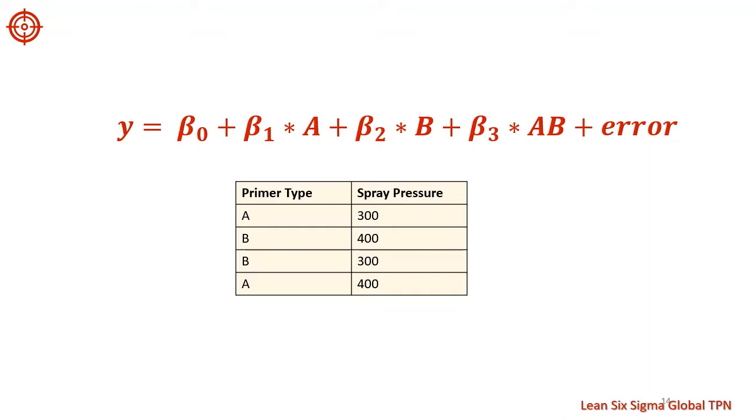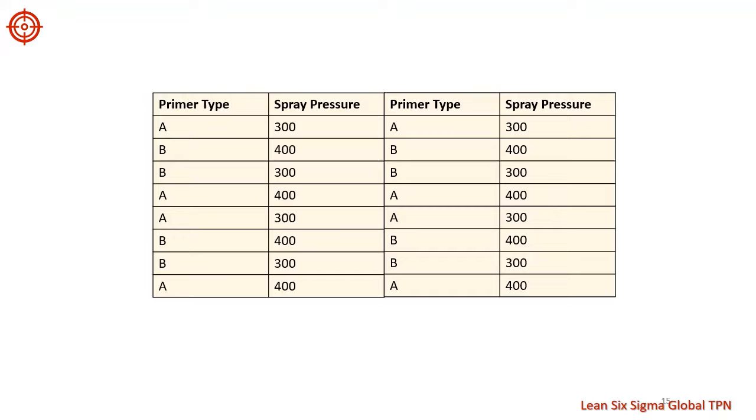Regardless of the factorial design, we always use one run to estimate the intercept beta 0. So in n runs, we will be able to estimate at most n minus 1 terms. In a single replicate of the full factorial design, all of the runs are spent, so there is no way to estimate the error term for this model. The error or measure of uncertainty determines which terms are statistically significant. So how can the team estimate the error term?